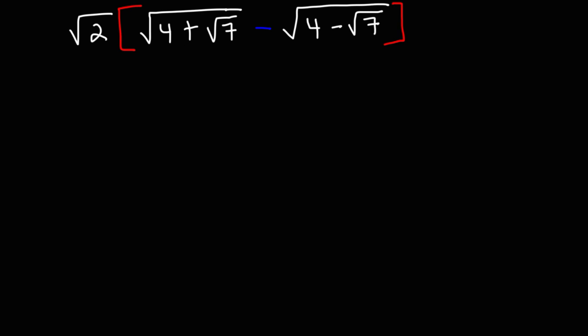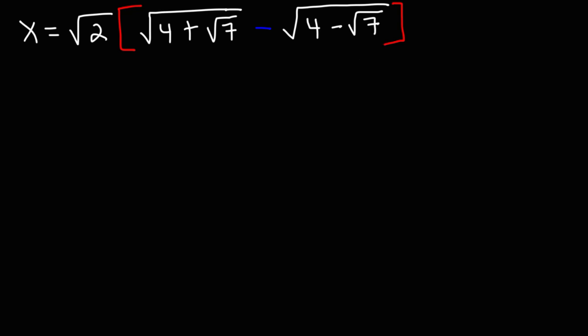The first thing we're going to do is set the entire expression equal to x. So if we can calculate the value of x, we can calculate the value of this entire expression, which is what we want to do in this problem. Now one of the best ways to get rid of a square root symbol is to take the square of both sides.